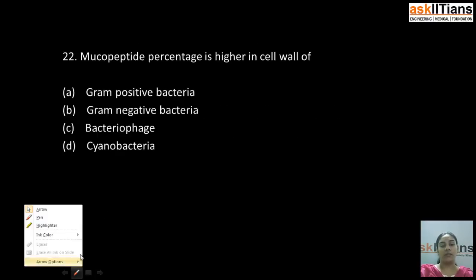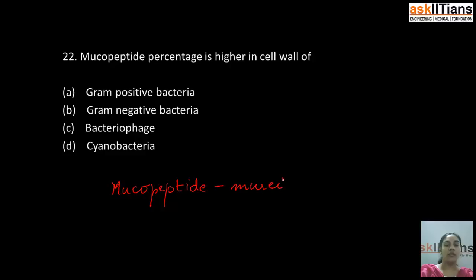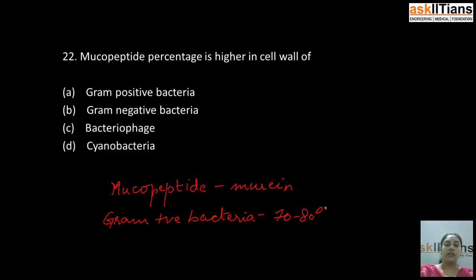The next question is: mucopeptide percentage is higher in the cell wall of — A) gram-positive bacteria, B) gram-negative bacteria, C) bacteriophage, D) cyanobacteria. The correct answer is A: gram-positive bacteria. Mucopeptide, also known as murein, is present in the cell wall of gram-positive bacteria. Gram-positive bacteria have about seventy to eighty percent mucopeptide content in their cell wall, whereas in gram-negative bacteria the content is about ten to twenty percent.